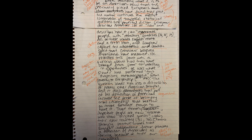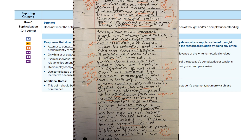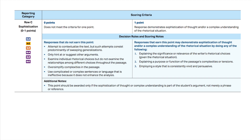Remember that one element of this point is style used consistently and that it can't be just a phrase or a reference. Some ways we can earn this point according to the rubric are by demonstrating sophistication of thought and/or complex understanding of rhetorical situation, explaining significance or relevance of rhetorical choices, explaining purpose or function of the passage's complexities or tensions, or employing consistently vivid and persuasive style throughout the passage. The conclusion, if you have time for it, is one place to drive this point home, but notice that at this point this paper already would have earned all six points because we have attended to style in the introduction and the body paragraphs.